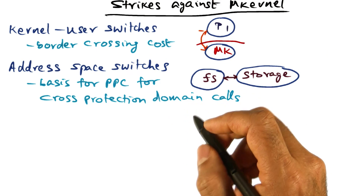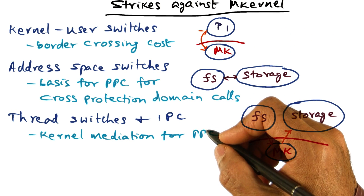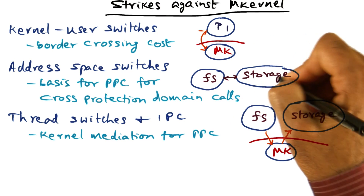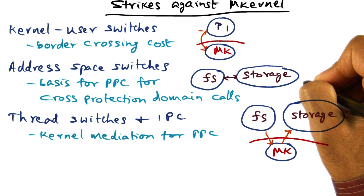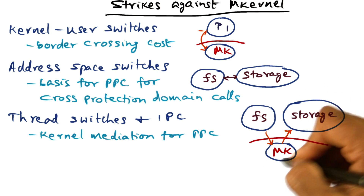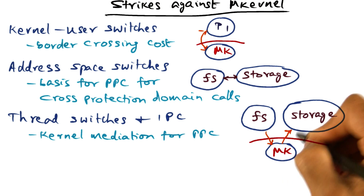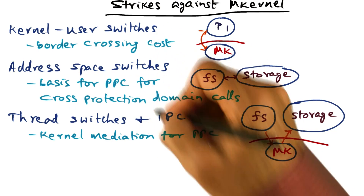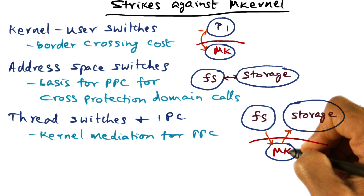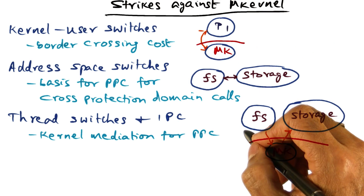The third strike against microkernel-based design is the cost of doing thread switches. These thread switches have to be mediated by the kernel. If the file system needs to make a protected procedure call to the storage module to complete an application-level request, that involves the file system being mediated through the microkernel to execute functionality in the storage module — requiring a thread switch and IPC. The basis for protected procedure call is thread switches and inter-process communication, which must be mediated through the kernel, and this kernel mediation can be expensive.